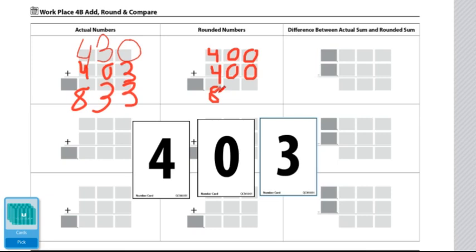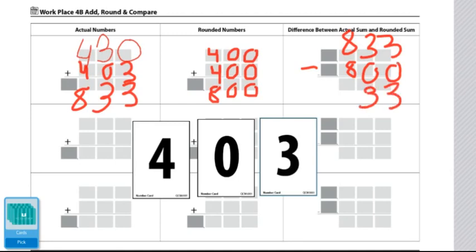Our last step is to find the difference between the actual sum and the rounded sum. So we are going to subtract 833 by 800. When we do this, we get a total of 33.